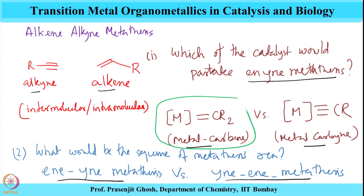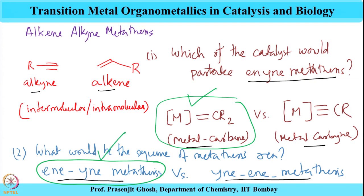To sum up the findings: it is the metal carbene complexes that are effective for alkene-alkyne metathesis reactions. The evidence points that the active species are indeed the metal carbene species which is responsible for enyne metathesis. With respect to the second question about the sequence of metathesis — whether olefin first and then alkyne, or alkyne first and then olefin — the evidence points to the enyne mechanism where alkene first is followed in most cases and is most popular.